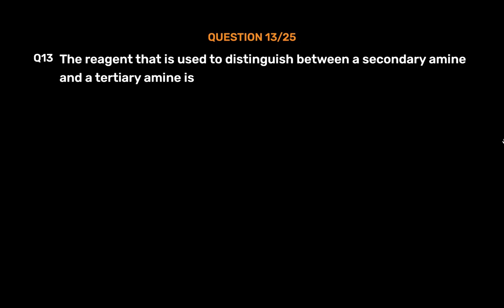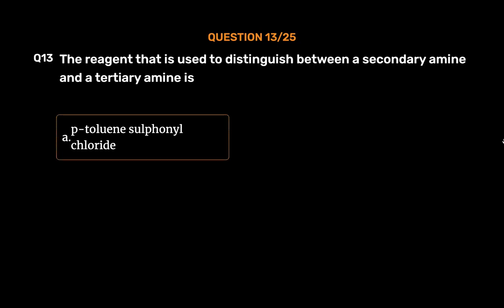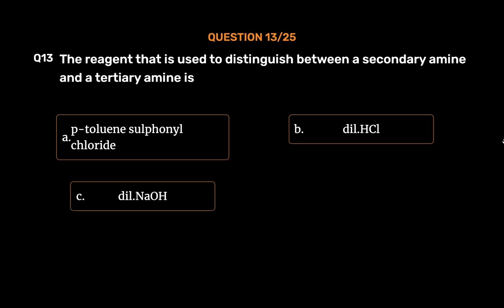Question number 13. The reagent used to distinguish between a secondary amine and a tertiary amine is: Option A, p-toluenesulfonyl chloride; Option B, dil. HCl; Option C, dil. NaOH; Option D, bromine water. The correct answer is Option A, p-toluenesulfonyl chloride.